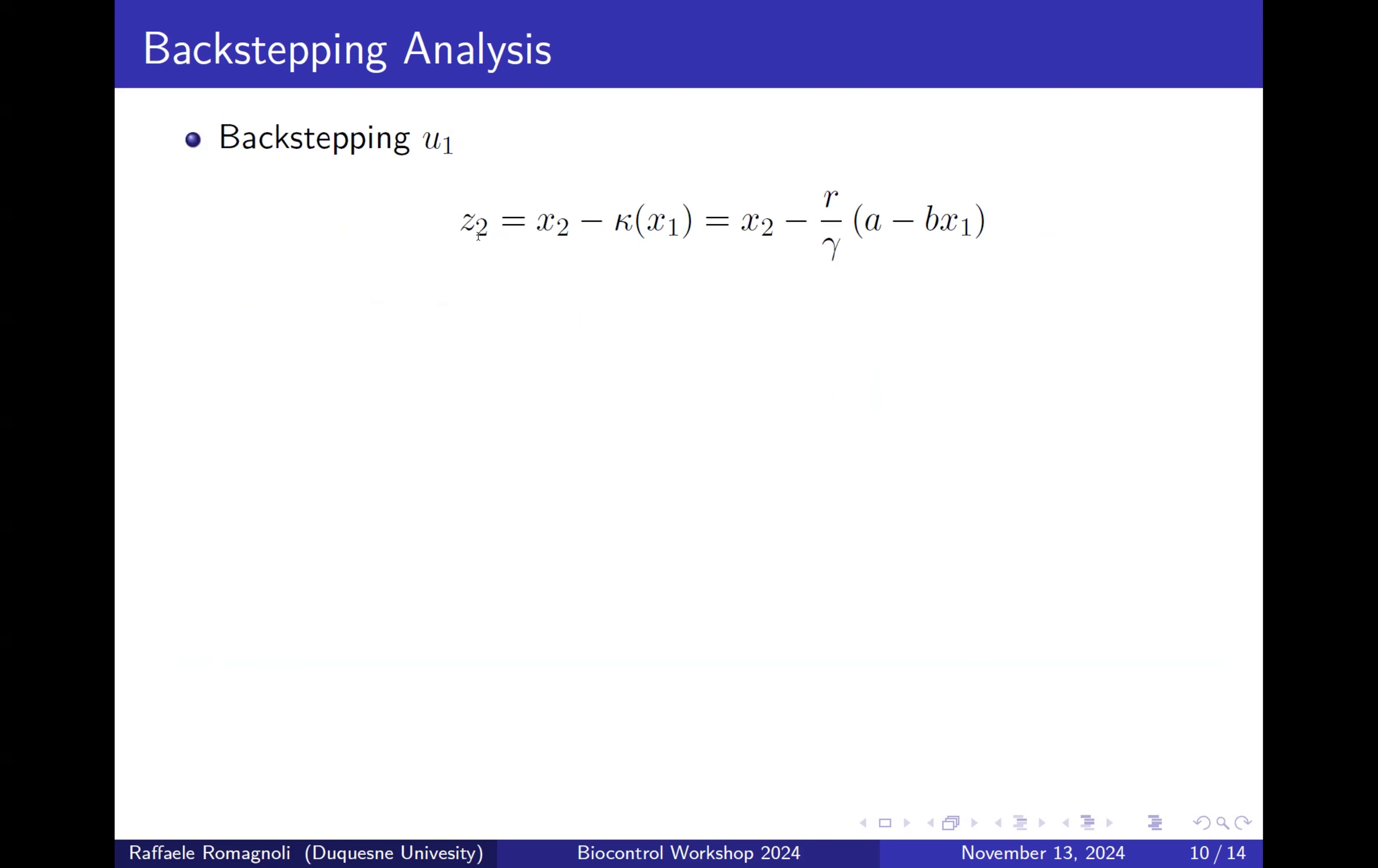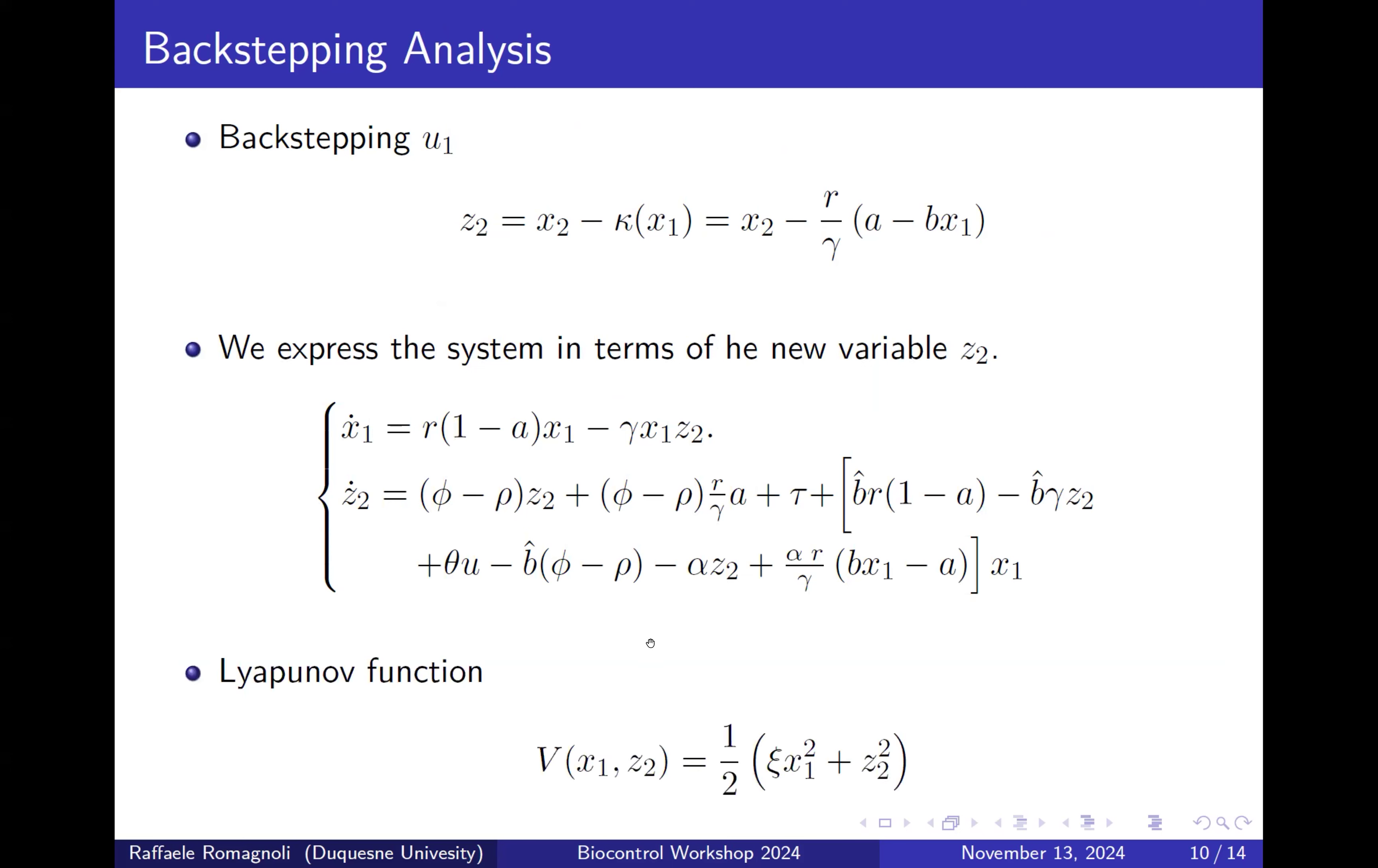We define a new variable Z2, which represents the difference between X2, the number of active CAR-T cell, and our desired controller. After all the substitutions, we study the asymptotic stability of this system. Because if Z2 is going to zero, it means that X2 is going to behave like the stabilizing controller.